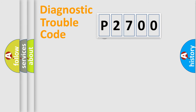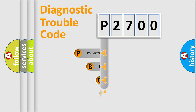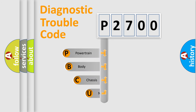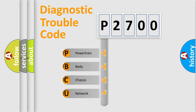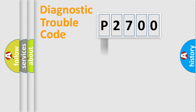First, let's look at the history of diagnostic fault code composition according to the OBD2 protocol, which is unified for all automakers since 2000. We divide the electric system of an automobile into four basic units: Powertrain, Body, Chassis, and Network. This distribution is defined in the first character of the code.